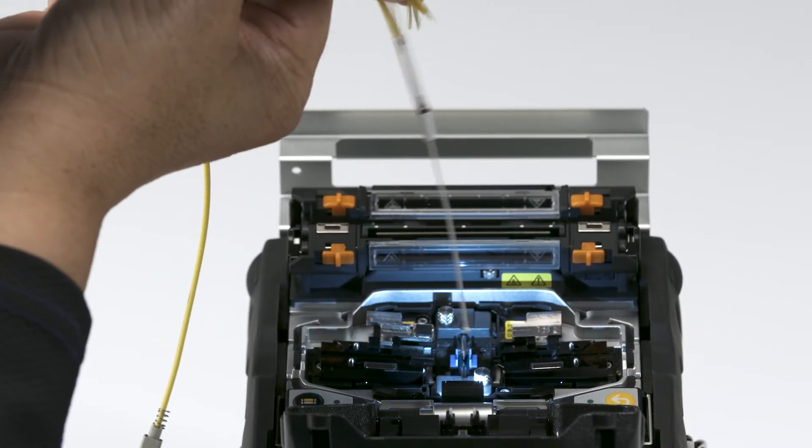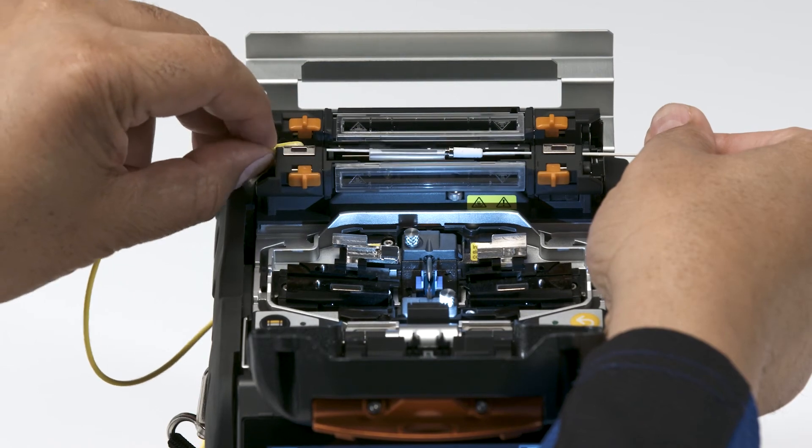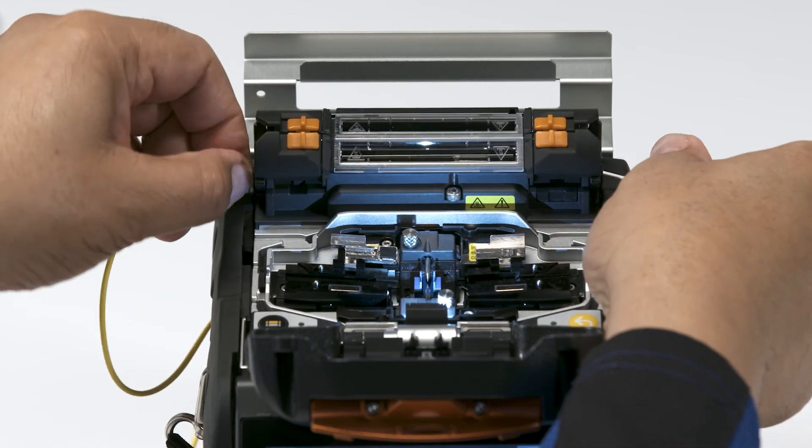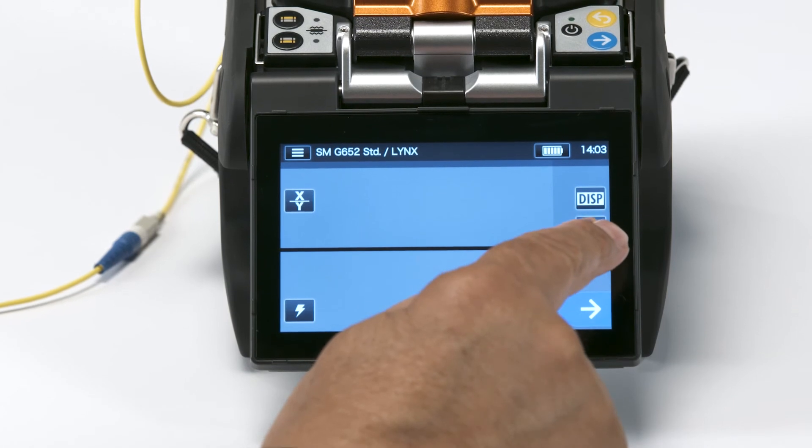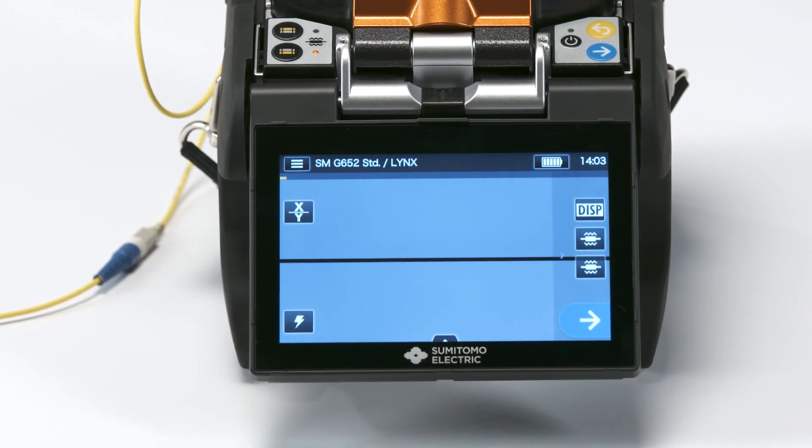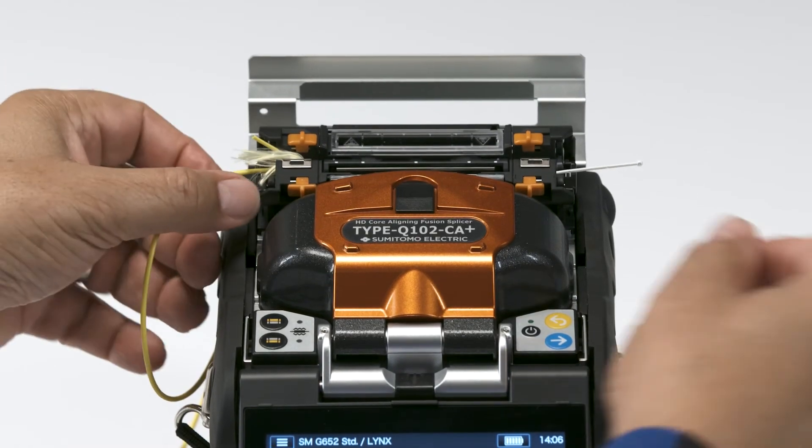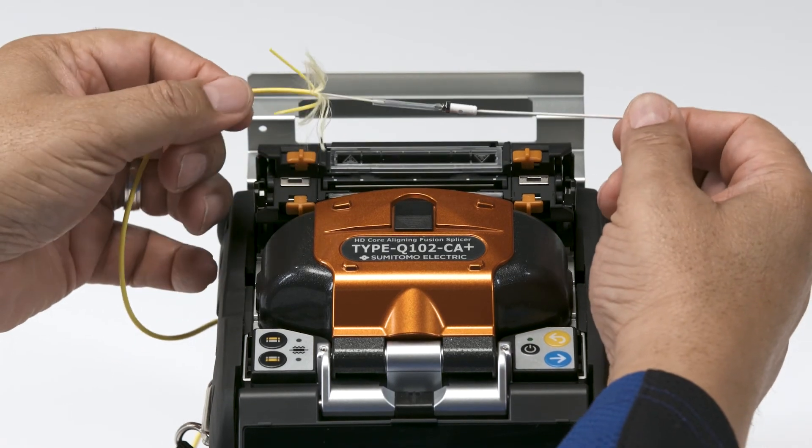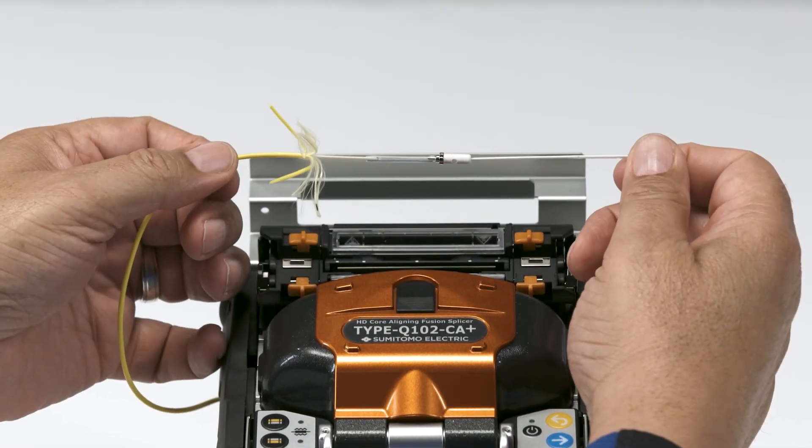Slide the protection sleeve over the fusion splice. Place in the heater oven. Close the heater oven and press the heater button to start the heating process. You'll need to let the sleeve cool down for a little bit before continuing.